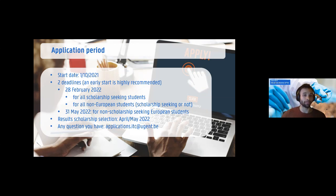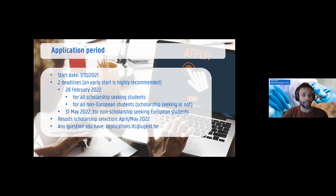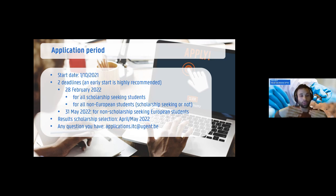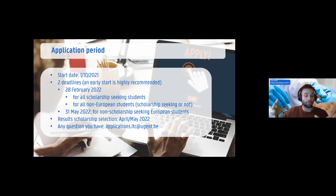Applications are already open — they opened in October. There are two important deadlines: the most important is the 28th of February. This is when we close applications for students trying to get an Erasmus Mundus scholarship, a Mastermind scholarship, or a VLIR-UOS scholarship. After this date, we will not evaluate any new files for scholarship selection.